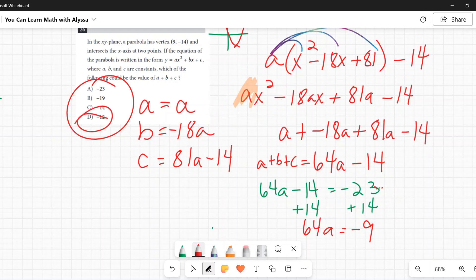So D negative 12 is the only one that would work because if I put negative 12 in there, the negative 12 plus 14 is a positive two. Thank goodness. And then a is going to be two over 64. It's a positive number. That's all we needed to be a positive. So D is my answer.